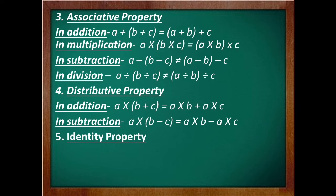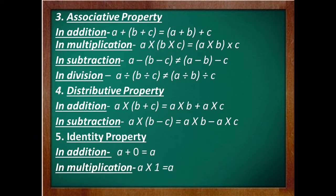The next property is identity property. In the case of addition, adding 0 to any integer gives the integer itself. In the case of multiplication, multiplying any integer by 1 gives the integer itself. Hopefully, it is also clear to you. That is why 0 is called the additive identity and 1 is called the multiplicative identity.